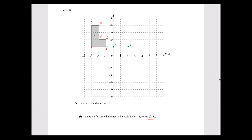Now for U: from the center, U is 3 units to the left. When I multiply 3 by 2, it gives 6. Since the direction reverses, I move rightwards — so from 0 to 6 rightwards, landing on 6. That gives us T' and U'.